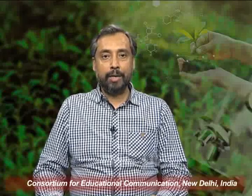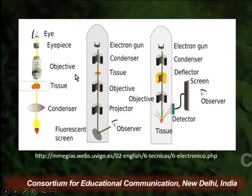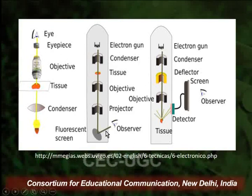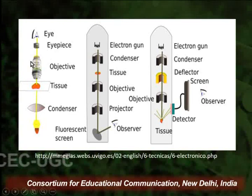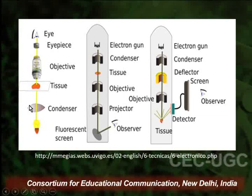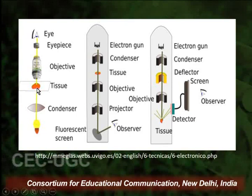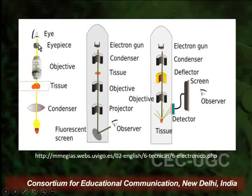Comparing a light microscope and an electron microscope with the help of a schematic diagram: in a light microscope, a visible light source is placed before the condenser, light passes through the condenser and then falls on the tissue, passes through the tissue, then goes through the objective and eyepiece lenses, and is observed by the naked eye.